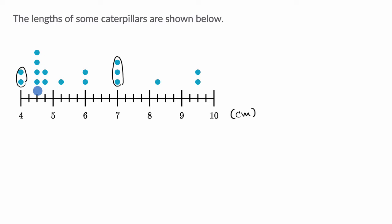For example, we have a lot of caterpillars at this length. What is that length? We can see that it is exactly halfway between four and five, so that is four and one-half centimeters long.